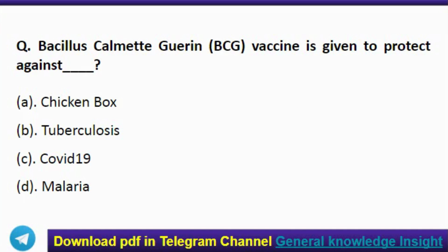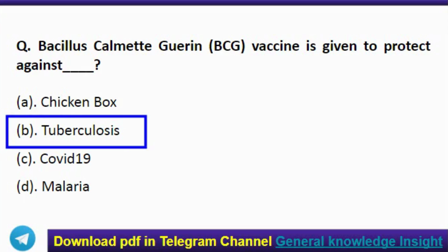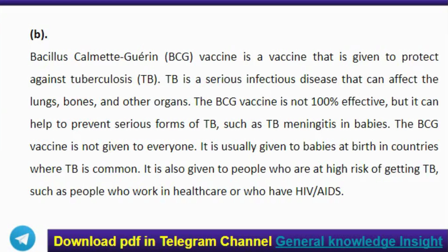The next question: the Bacillus Calmette-Guérin BCG vaccine is given to protect against which disease? The correct answer is option B, tuberculosis. The BCG vaccine is a vaccine given to protect against tuberculosis (TB). TB is a serious infectious disease that can affect the lungs, bones, and other organs. The BCG vaccine is not 100% effective but it can help to prevent serious forms of TB, such as TB meningitis in babies.